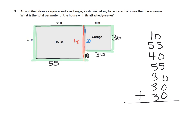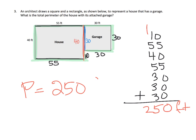So we have to add seven lengths total. Let's add them the traditional way. Adding the ones: 0 plus 5 plus 0 plus 5 plus 0 plus 0 plus 0 equals 10, so we write 0 and carry the 1. Then adding all the tens gives us 25, so that's 250 total. The perimeter of this whole house is 250 feet.